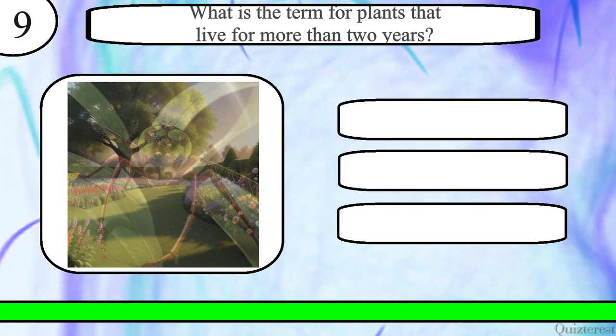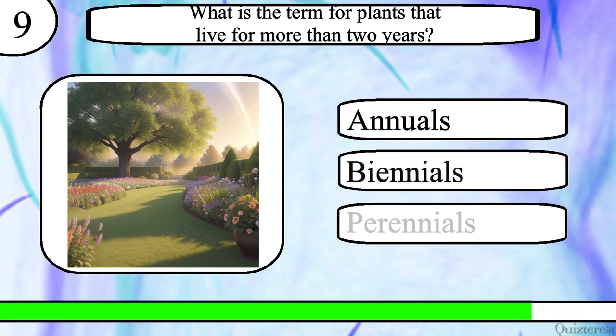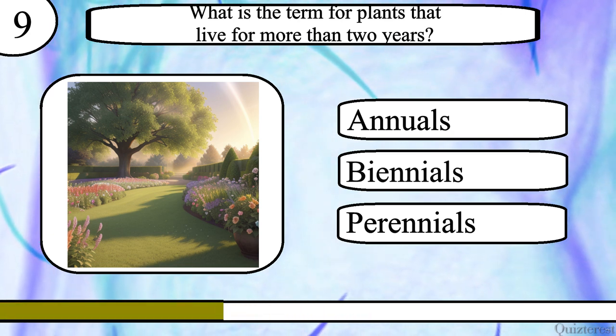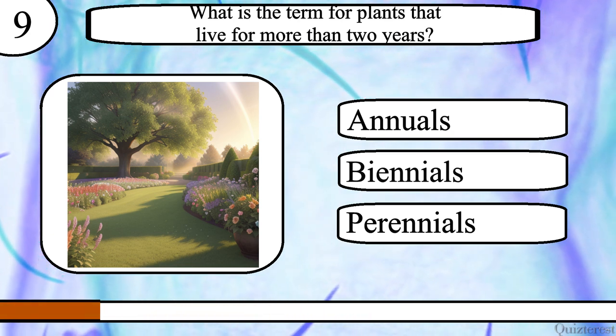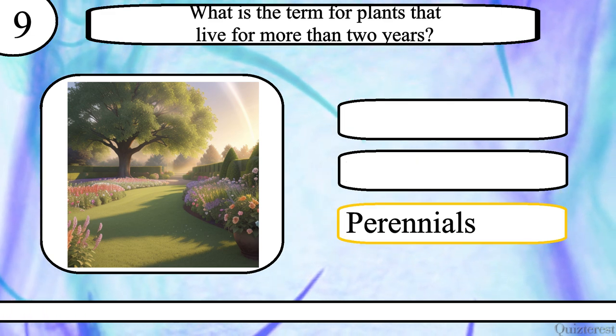Question 9. What is the term for plants that live for more than two years? Annuals, biennials or perennials? The correct answer is perennials.